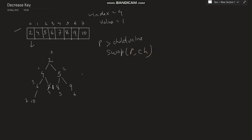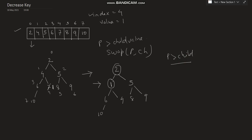After swapping 4 and 1, the heap is updated. Now we find that 1 is still smaller than its new parent 2. Again, the parent value is greater than the child value, so we need to swap parent and child. After this swap, 1 moves to the top and 2 moves down. This is the modified heap after performing the decrease key operation.